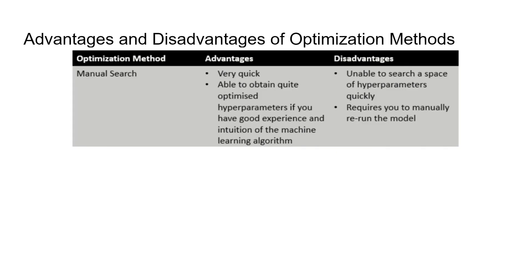Now let's look at some advantages and disadvantages of these optimisation methods. With manual search, which is about using intuition to set hyperparameters, some advantages are that it is very quick and you can obtain quite optimised hyperparameters if you have good experience and intuition of the machine learning algorithm. Some disadvantages, however, are that you're not really able to search a space of hyperparameters quickly, and it requires you to manually rerun the model.